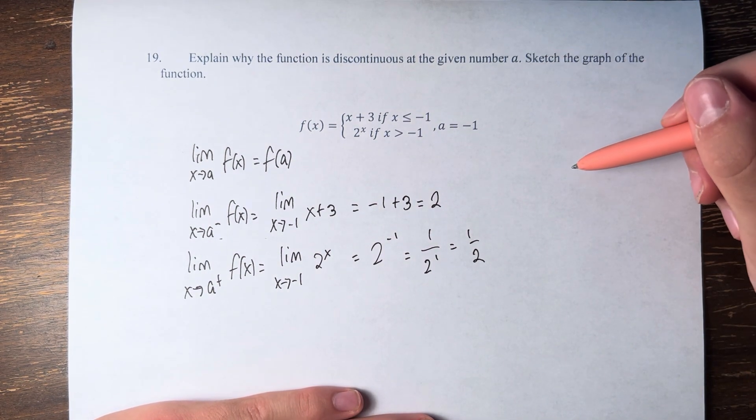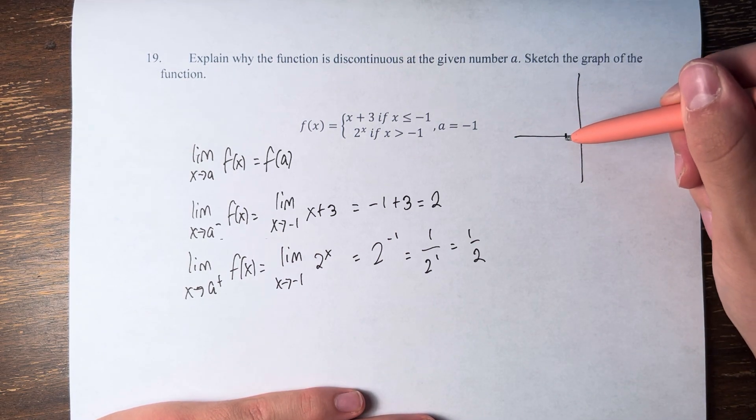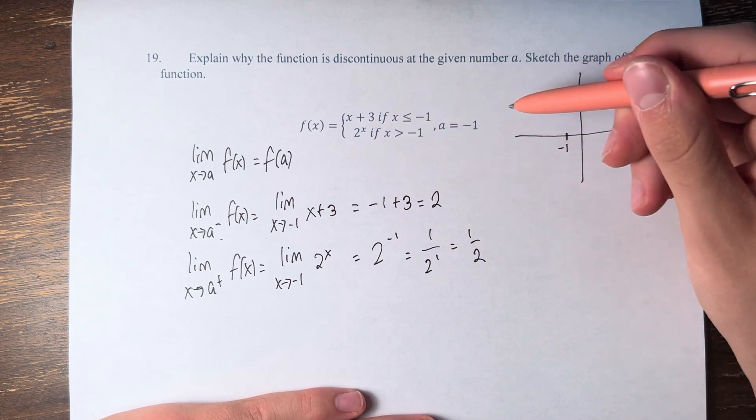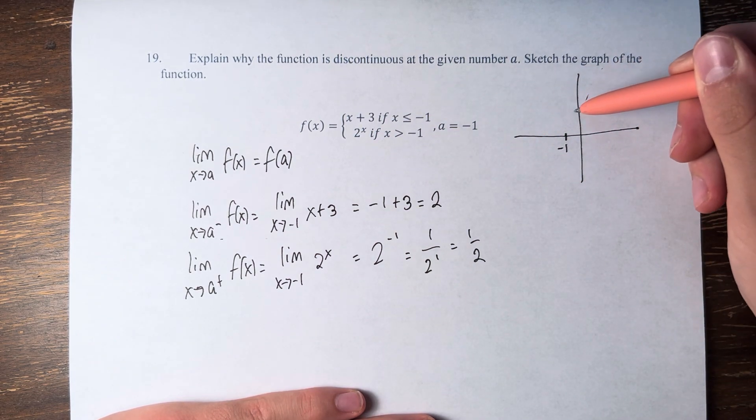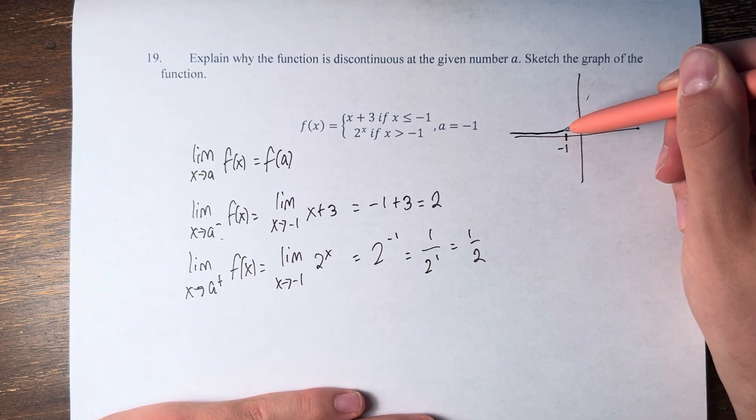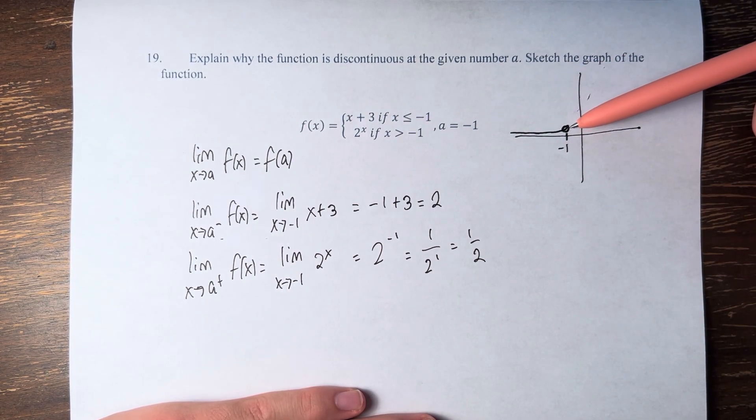We're also asked to graph this function to demonstrate what a discontinuity actually looks like. We have the point of negative 1 here. The graph of 2 to the x looks something like this. I'm going to draw it and then we're going to stop at negative 1. We draw an open circle to denote that the function does not equal 2 to the x at this point.